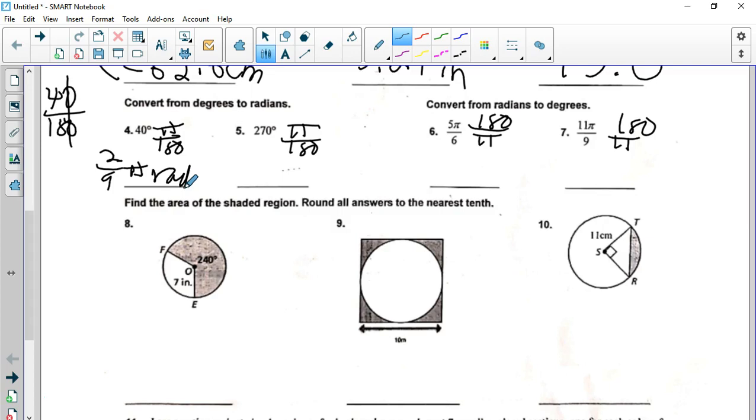So on this one, divide both by 10, you get 27 over 18. What goes into both of those numbers? 9. How many times? 3 times, and 2 times. I will write it this way, for this one, just so you can see the two different ways. So you can write as a fraction in front of the pi, or you can put the pi up with the numerator over the denominator. It doesn't matter. They're both right.